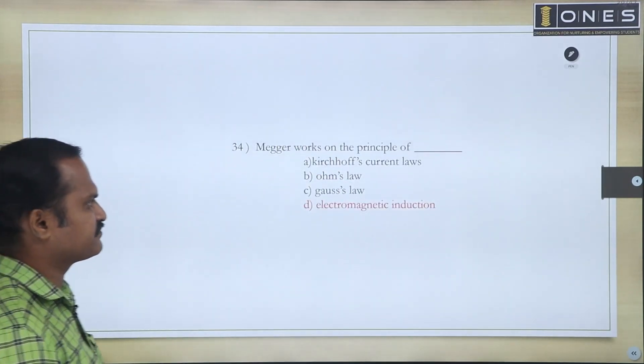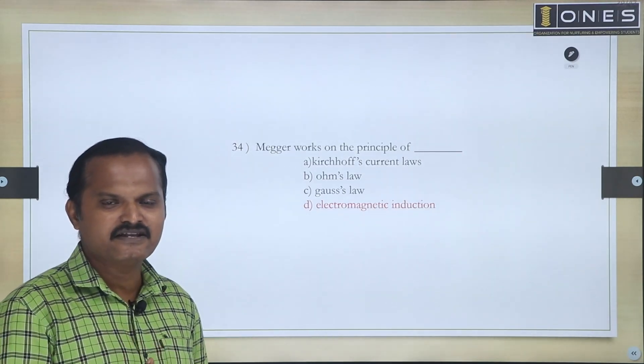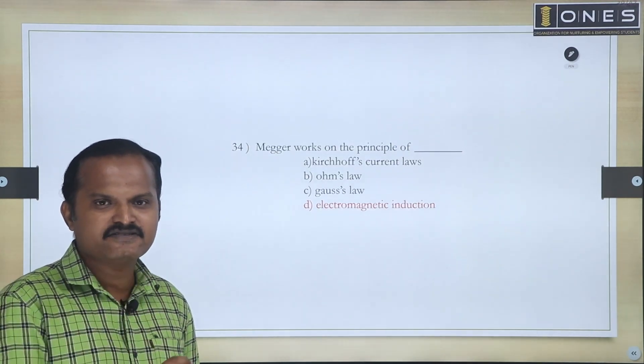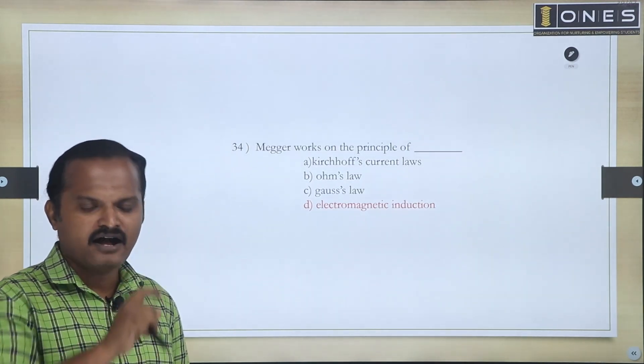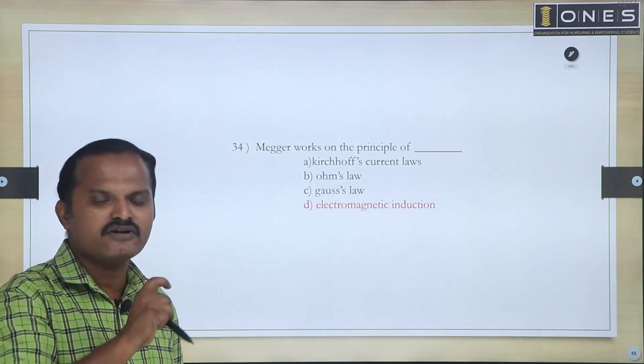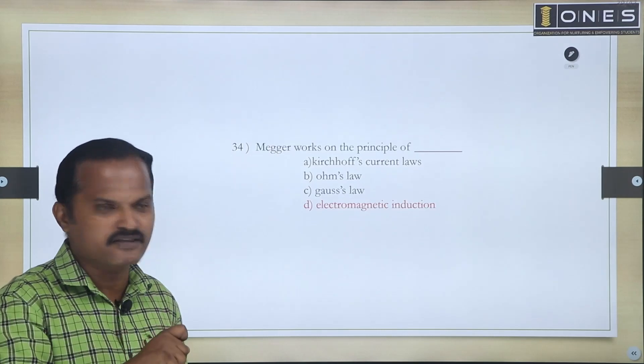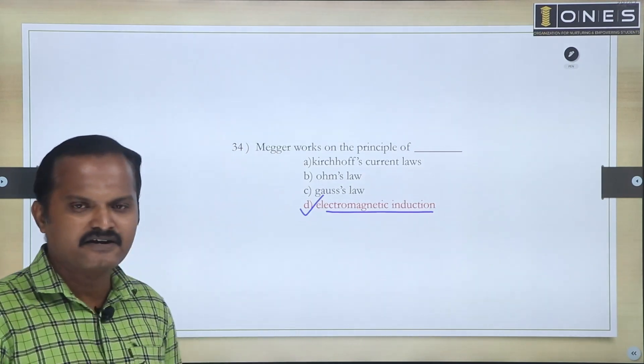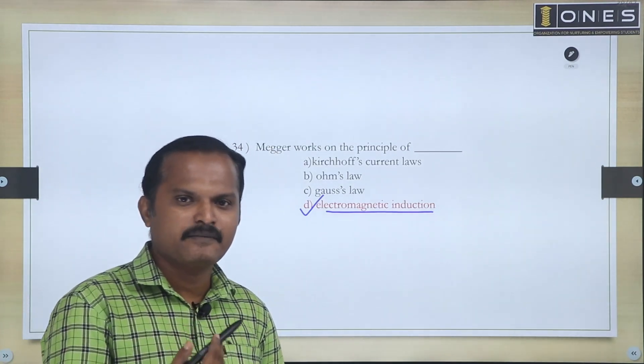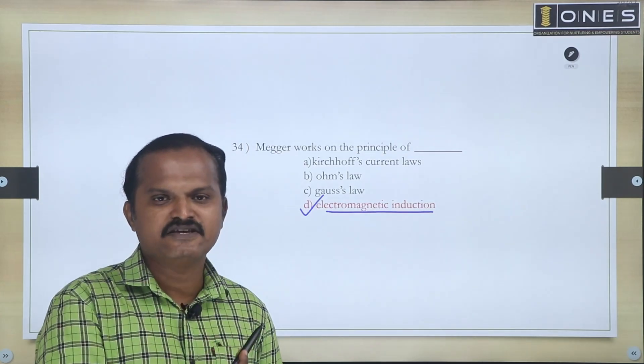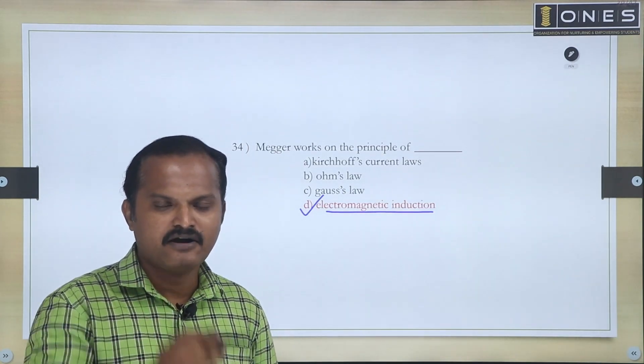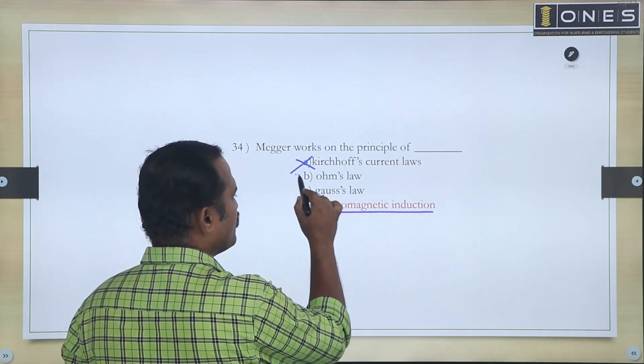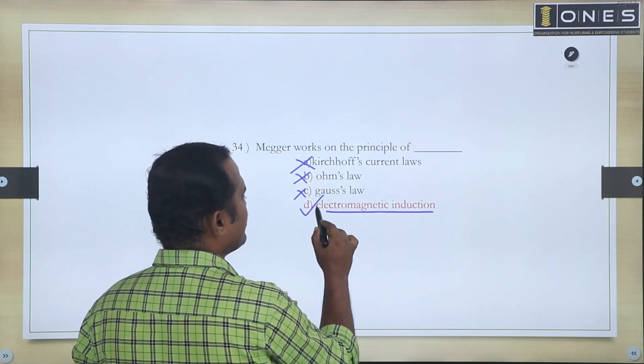Next one: Megger works on the principle of? In Megger case, we have two types: one hand-driven type, one battery operated. There are two coils. That coil passes current, they develop torque, that's the Megger working principle. So it is mainly by electromagnetic induction. It is not based on Kirchhoff's current law, not by Ohm's law, not by Gauss's law, it is by electromagnetic induction.